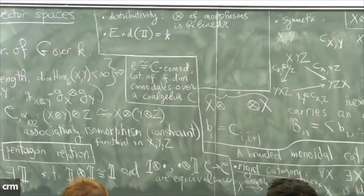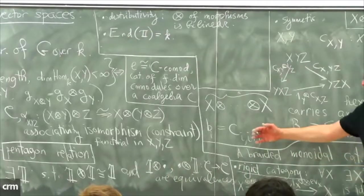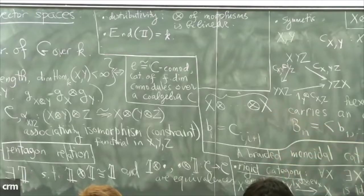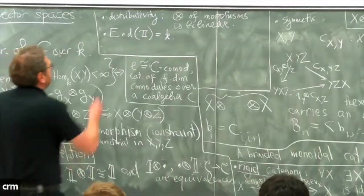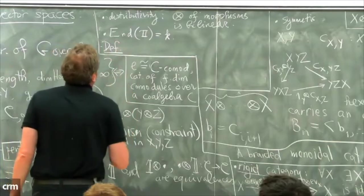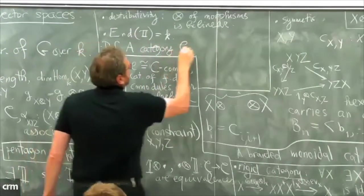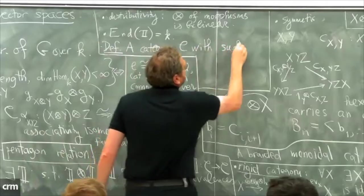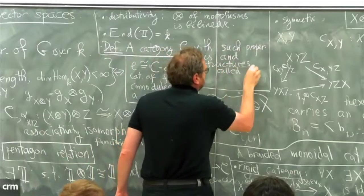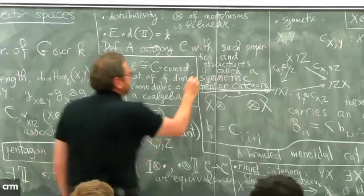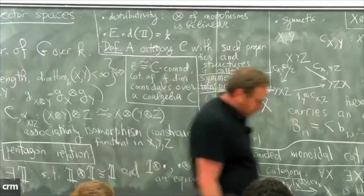Finally, there is a condition on endomorphisms of the unit. In general endomorphisms of the unit could be a direct sum of several copies of k, but in that case the category simply decomposes as a direct sum of several copies of categories where End(1) ≅ k. This is a very minor condition. With all of these properties and structures, we make a definition: such a category c is called a symmetric tensor category.